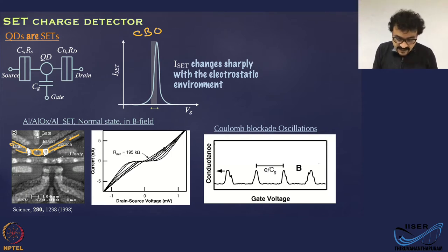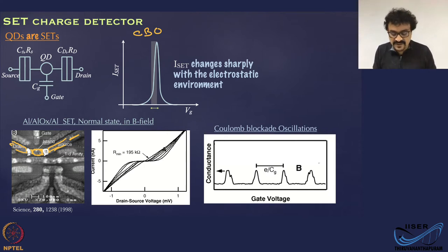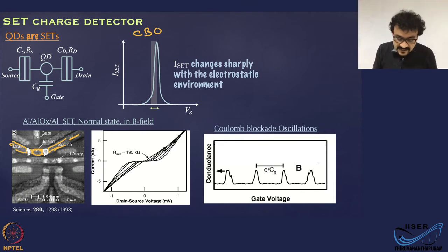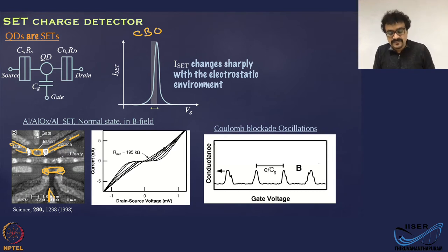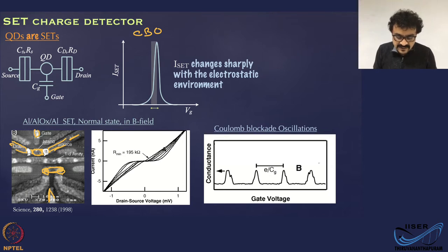In this diagram, you can see a bunch of other tunnel junctions which are not our focus for this discussion. You can see another single electron transistor here with two tunnel junctions and an island. And the gate here is coupled to this island.